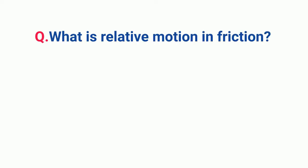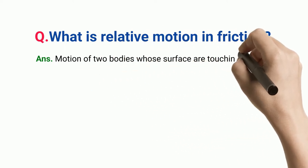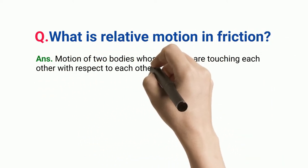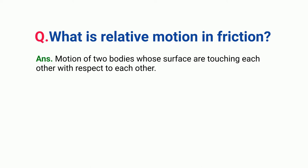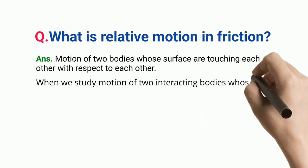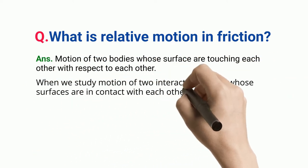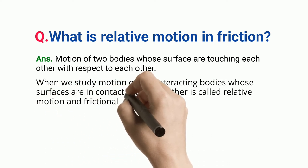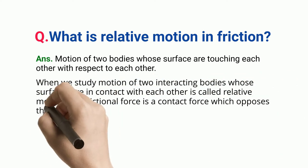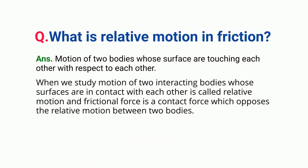What is relative motion in friction? Motion of two bodies whose surfaces are touching each other with respect to each other. When we study motion of two interacting bodies whose surfaces are in contact with each other, this is called relative motion, and frictional force is a contact force which opposes the relative motion between two bodies.